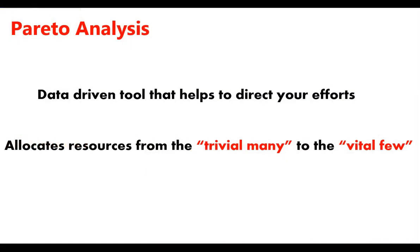So, Pareto analysis — it's a data-driven tool that helps you prioritize and directs your effort. It also helps you allocate your resources away from the trivial many — machines one, two, and three weren't really that big a deal — to the vital few, in this case machines number four and seven. This is Professor Cummings, and this was a brief video on Pareto analysis. Check out my other videos in this series on Lean Six Sigma. Subscribe to the channel or visit The Engineer's Reference — thanks for watching.